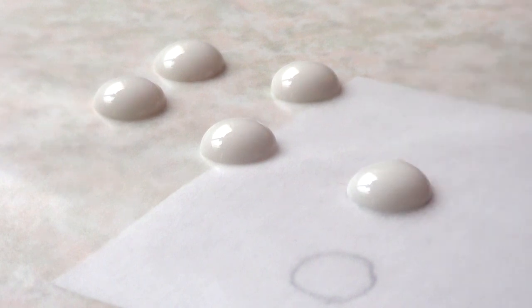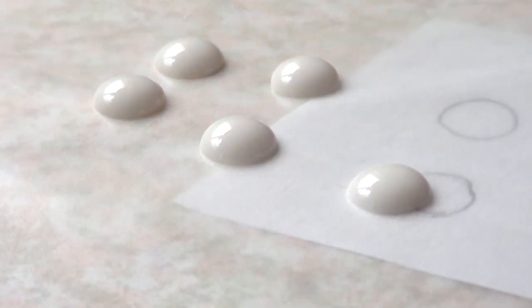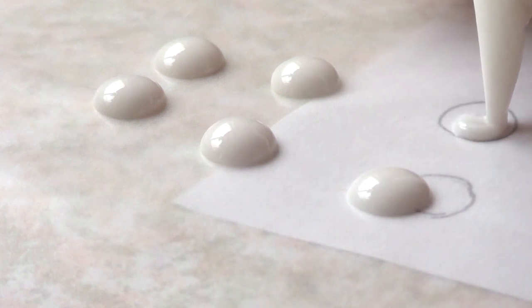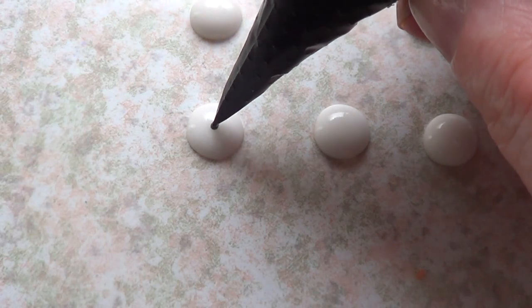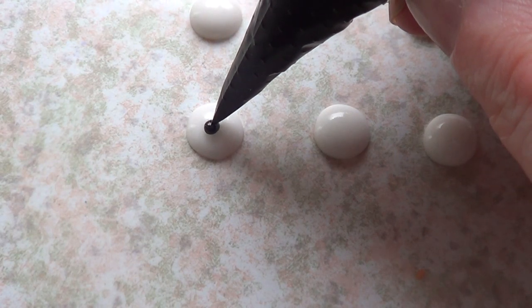I'm just going to make a few circles in there, and I'm just going to be moving my piece of paper as I go on. Just before it dries, I'm going to be taking some black royal icing, which is just royal icing with some black gel food coloring, and I'm just going to add tiny dots in the middle.